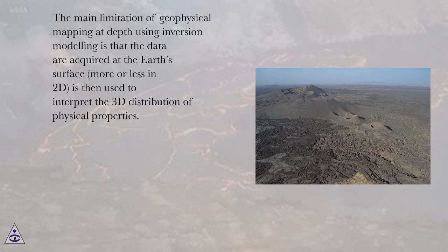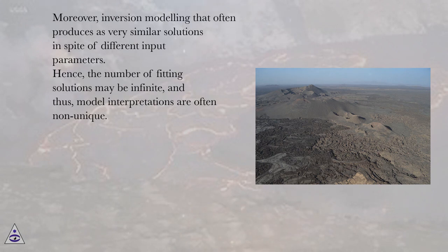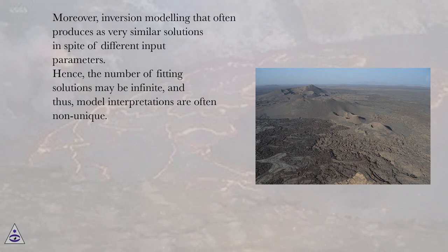The main limitation of geophysical mapping at depth using inversion modeling is that the data are acquired at the Earth's surface, more or less in 2D, and are then used to interpret the 3D distribution of physical properties. Moreover, inversion modeling often produces very similar solutions in spite of different input parameters. Hence, the number of fitting solutions may be infinite, and thus model interpretations are often non-unique.